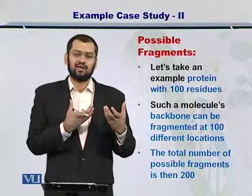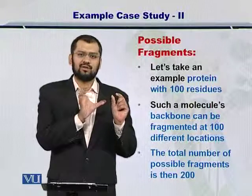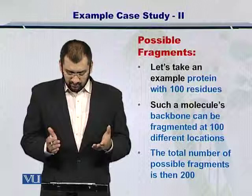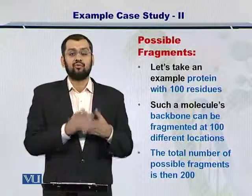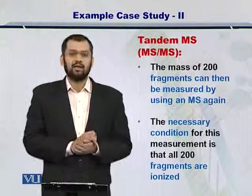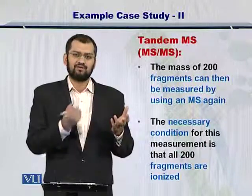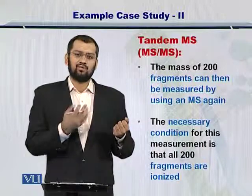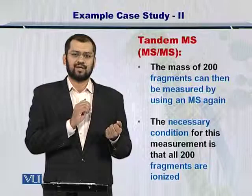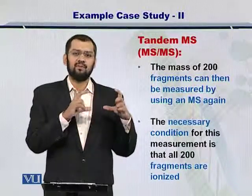The only thing that varies is the size of the N-terminus and C-terminus fragments. As the N-terminus fragment becomes smaller, the C-terminus fragment becomes larger, and vice versa. For a 100-residue protein or peptide, you would have 200 different possibilities for fragmenting the molecule. After fragmentation, you can measure the molecular weight of each fragment using the monoisotopic peak, just as you did in MS1, obtaining two MS2 monoisotopic peaks.